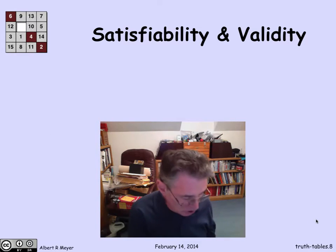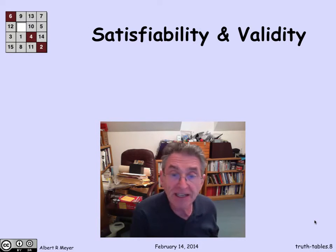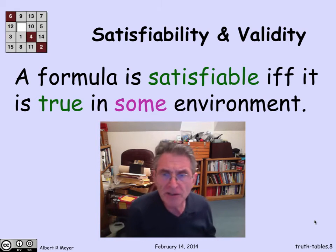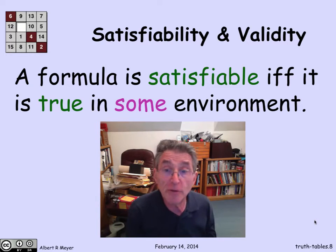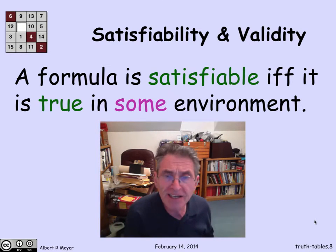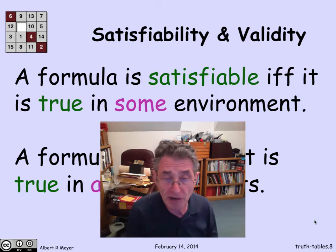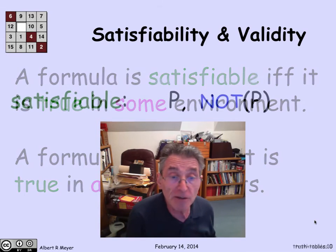Now we come to two crucial properties of formulas: satisfiability and validity. A formula is satisfiable if and only if it's true in some environment — that is, there is some way to set the values of the variables to truth values such that the formula comes out true. A formula is valid — also called a tautology — if and only if it's true in all environments: no matter what you set the variables to, it's going to come out true.